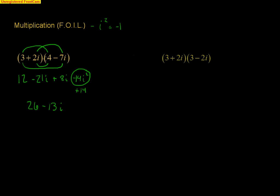So, that's how you do a multiplication. You still do the first outer inner and the last. And, a lot of times, when you multiply the last terms, you're going to get the i squared. And, just remember that i squared is negative 1.